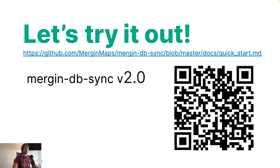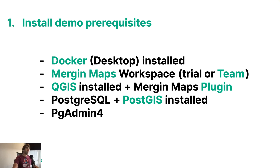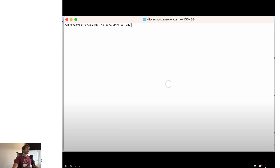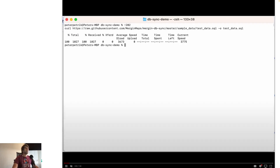Let's try it out. I'll go through the quick start guide — you can check the link or scan the QR code. I'll be running this on my local computer which has Docker installed. I have a Merging Maps team workspace, QGIS installed with the Merging Maps plugin, and PG Admin 4. First, I need to start and set up a Postgres container using Docker, create a database, and import some sample data from the DB Sync project.